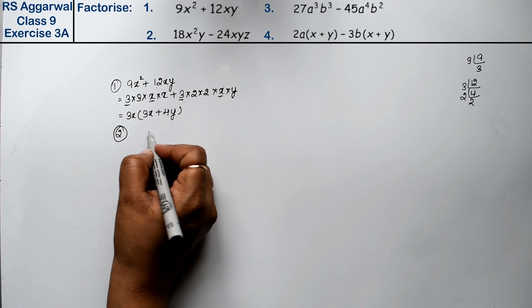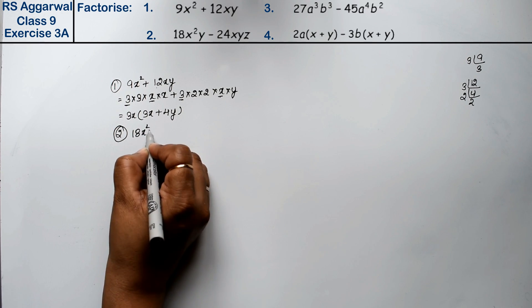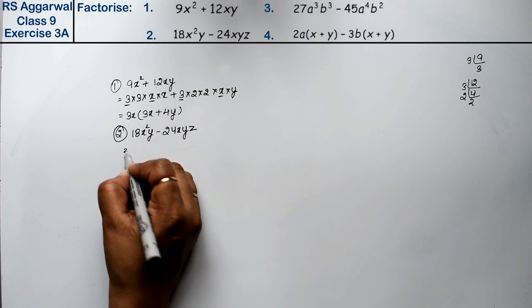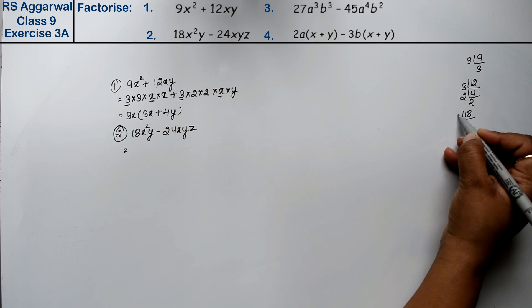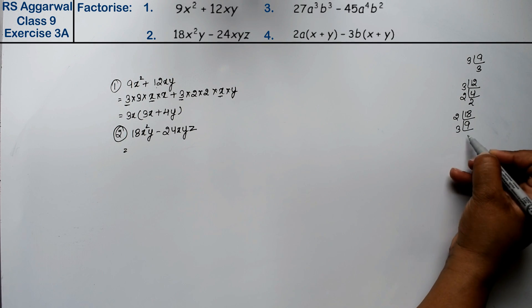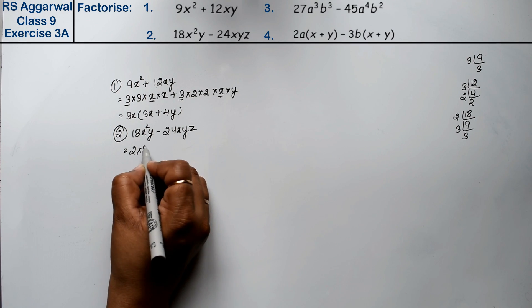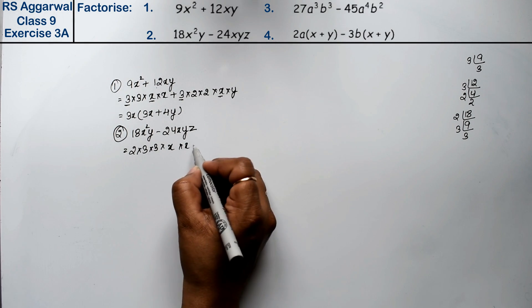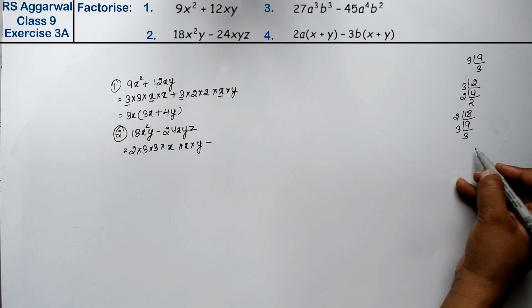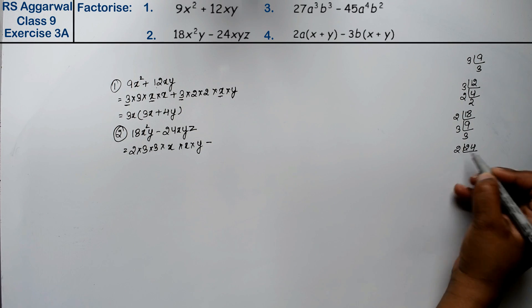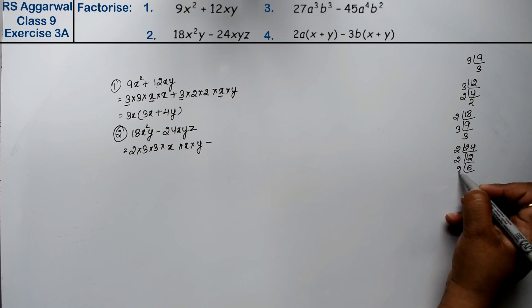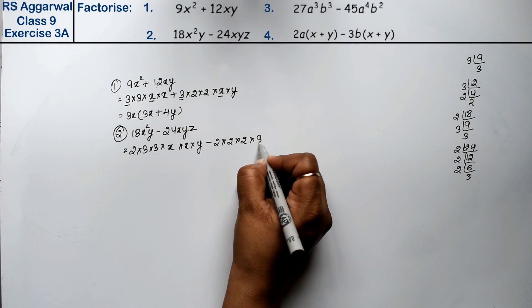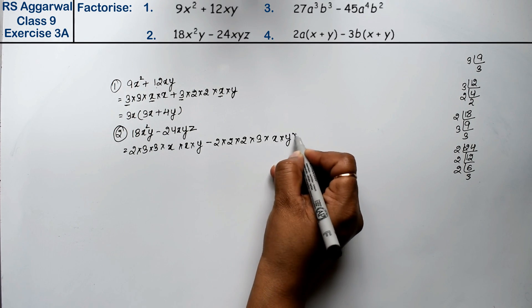Let's do second question. Question number second is 18x²y - 24xyz. Now see, what can we write 18? 18 can be written as 2 × 9, 3 × 3 = 9, right? So 2 × 3 × 3 × x × x × y minus. 24 can be written as 2 × 12, 2 × 6, 2 × 3. So 3 times 2, 2 × 2 × 2, and 1 times 3, and x × y × z.